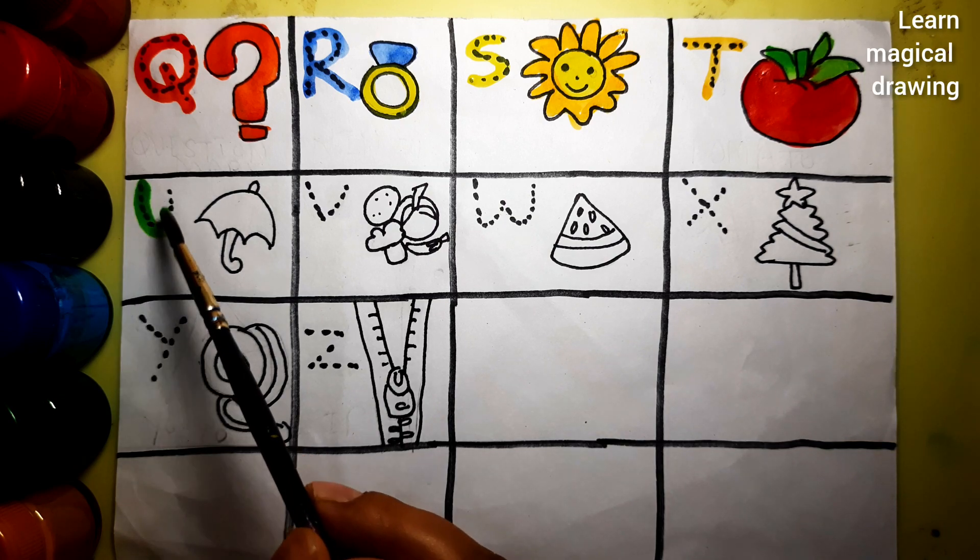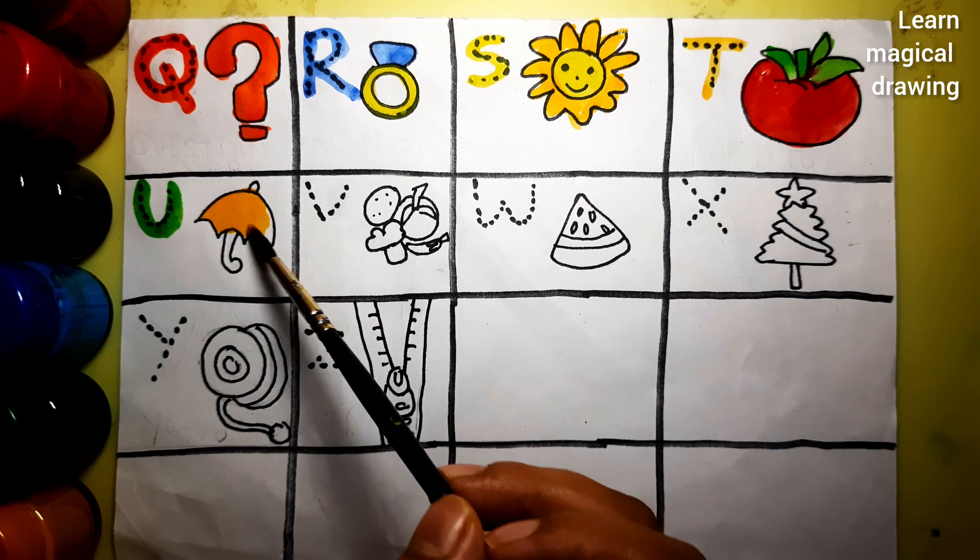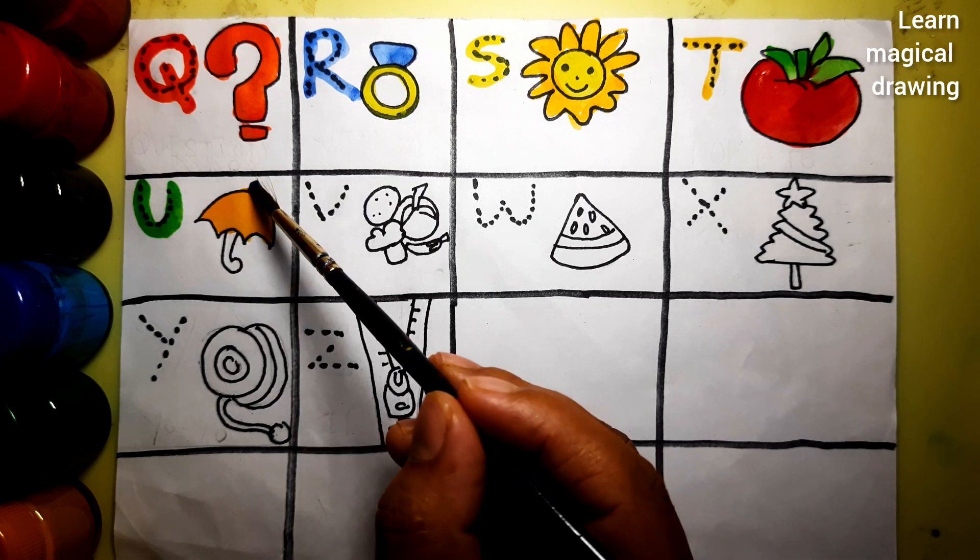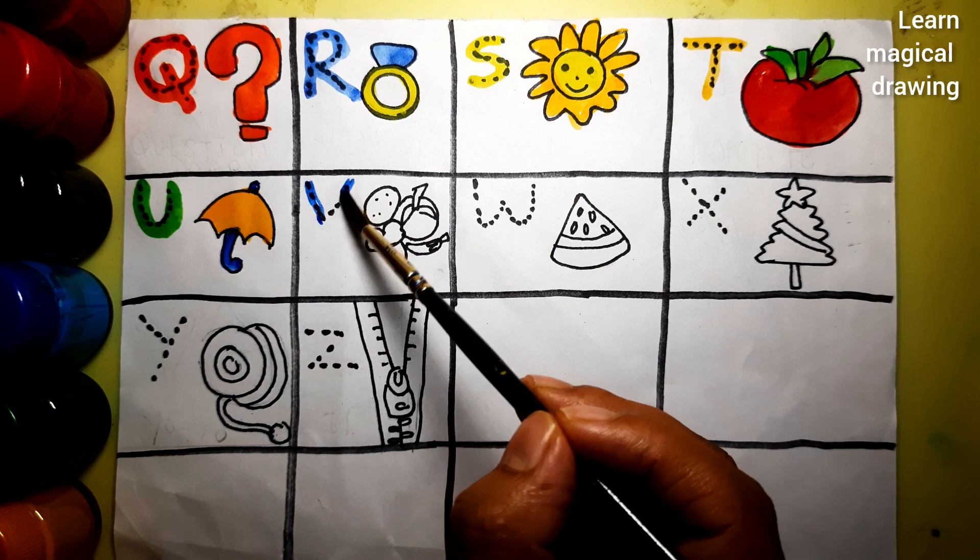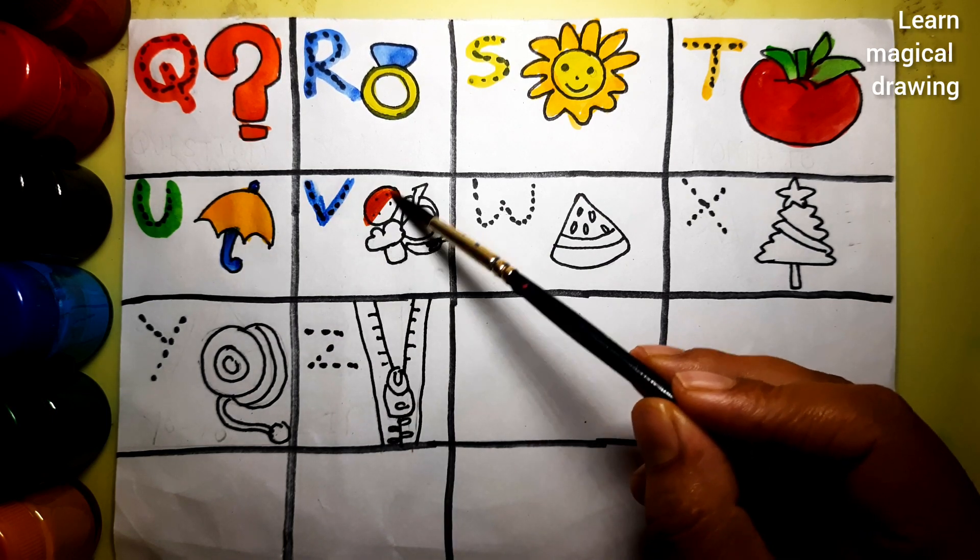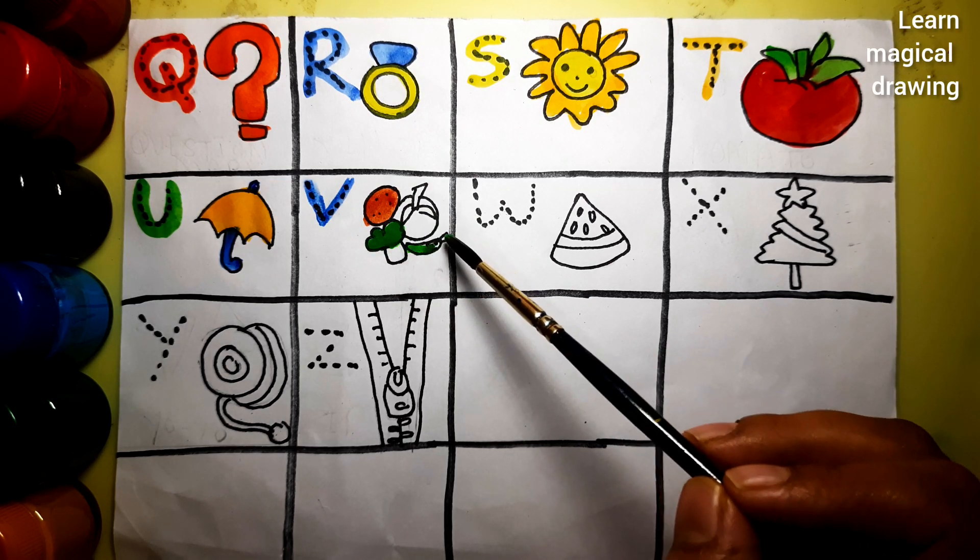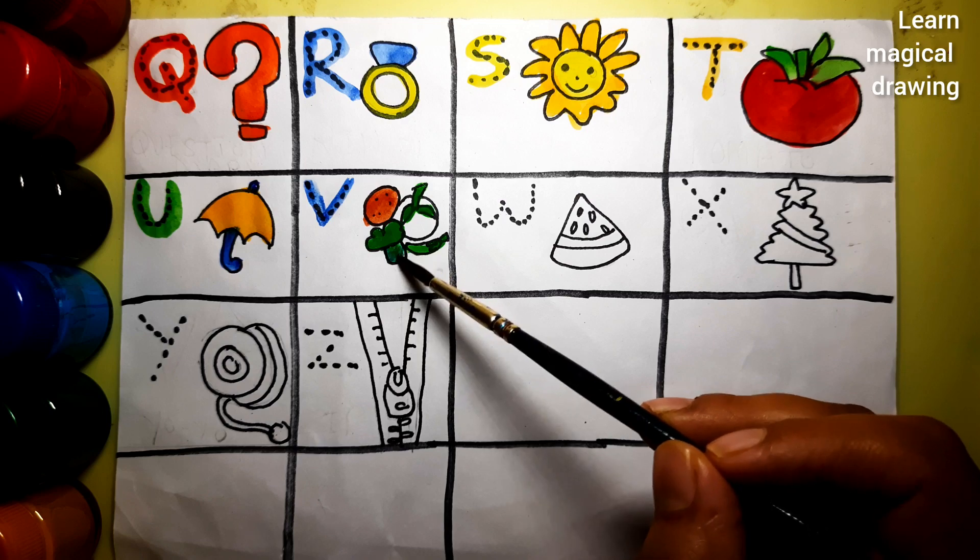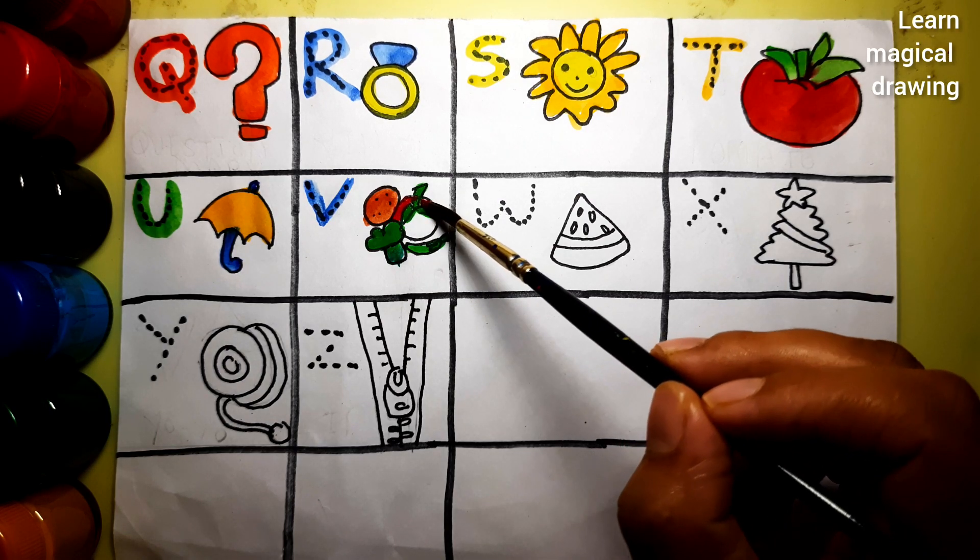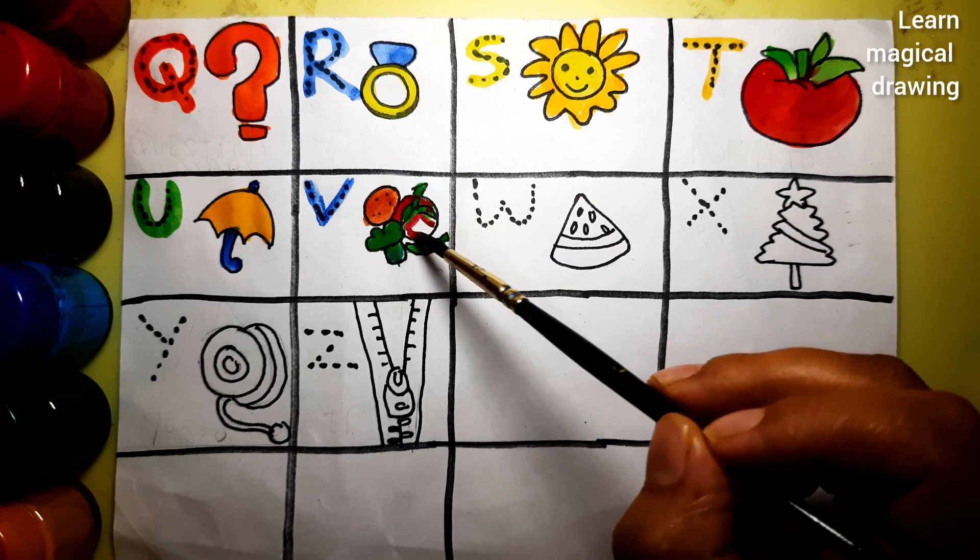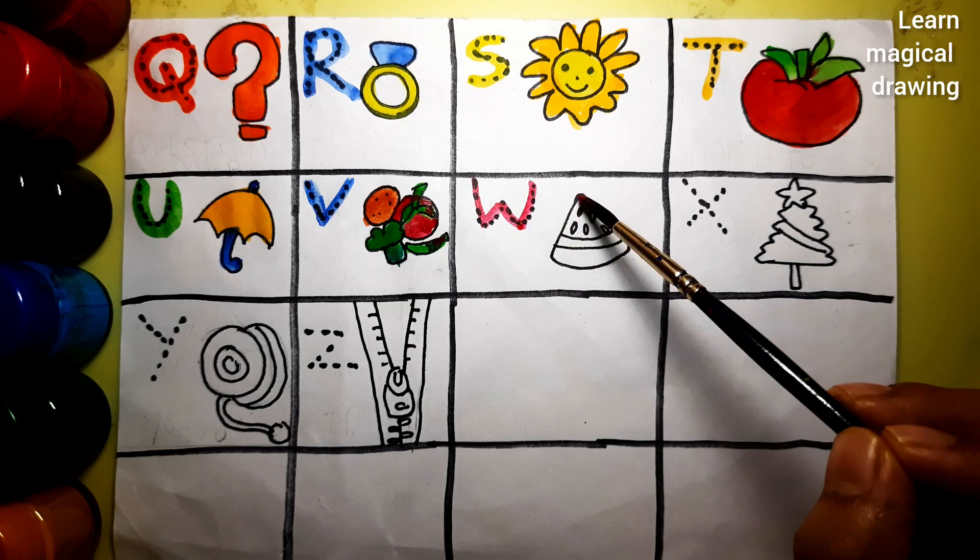U, U for umbrella. V, V for vegetable. W, W for watermelon.